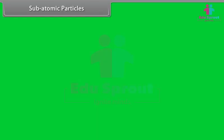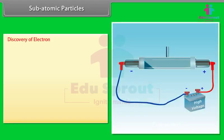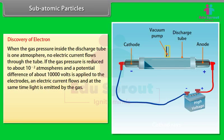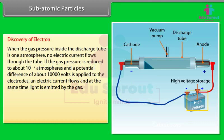Subatomic particles — Discovery of the electron. A discharge tube is a long glass tube fitted with metal electrodes on either end, across which high voltage can be applied. The tube is also connected to a vacuum pump for controlling the pressure of gas inside. There is a coating of phosphorescent material behind the anode. When the gas pressure inside is 1 atmosphere, no electric current flows through the tube.